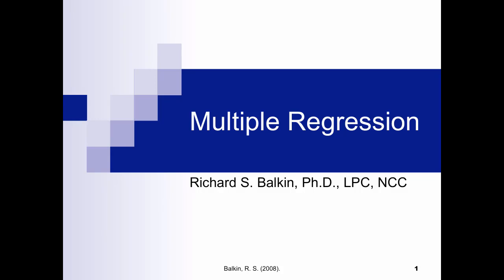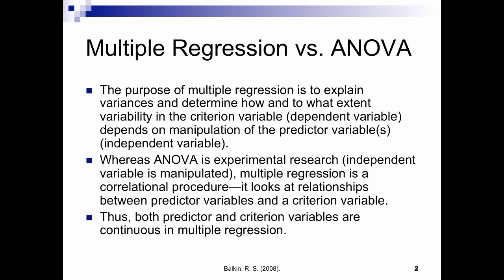We're going to discuss multiple regression. Recall that regression is a correlational design, whereas ANOVA is an experimental design. In regression, we're attempting to explain the amount of variance accounted for in a model. What we're trying to do is essentially prediction — show how some variables might be predictive of another variable. We're going to call that dependent variable the criterion variable, and what were once called independent variables are now going to be referred to as our predictor variables.